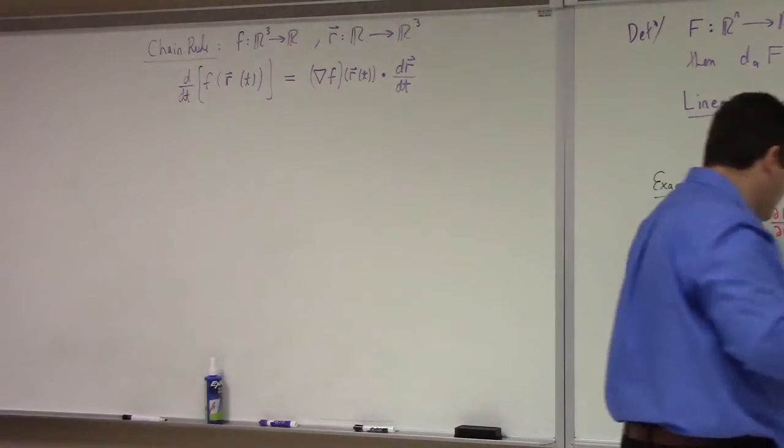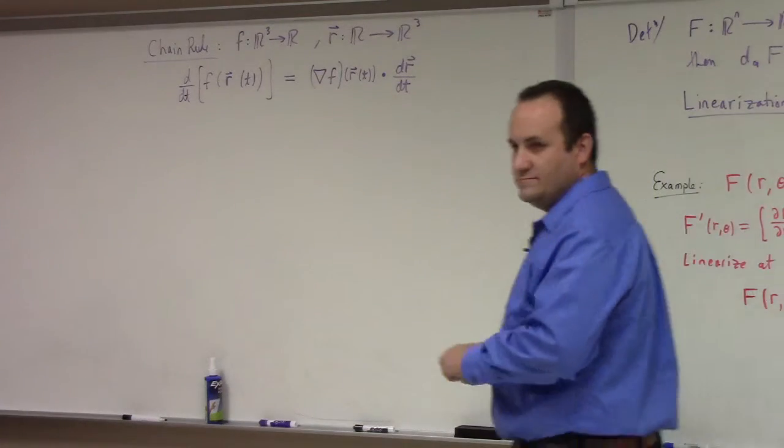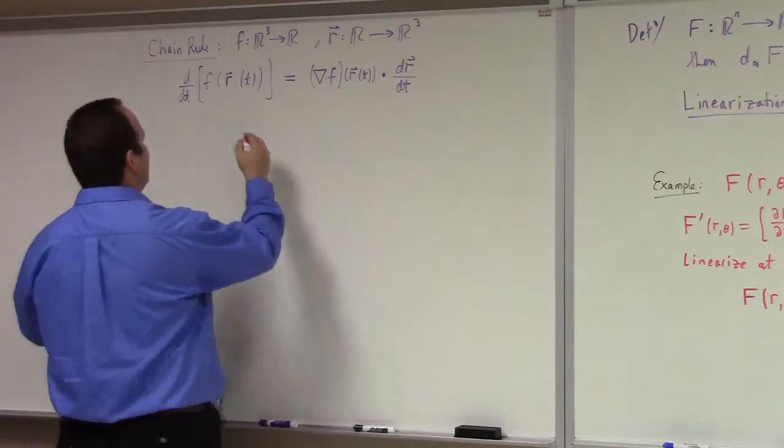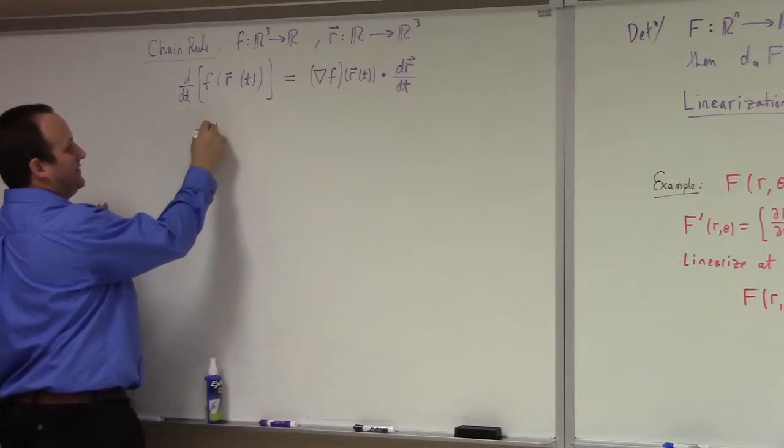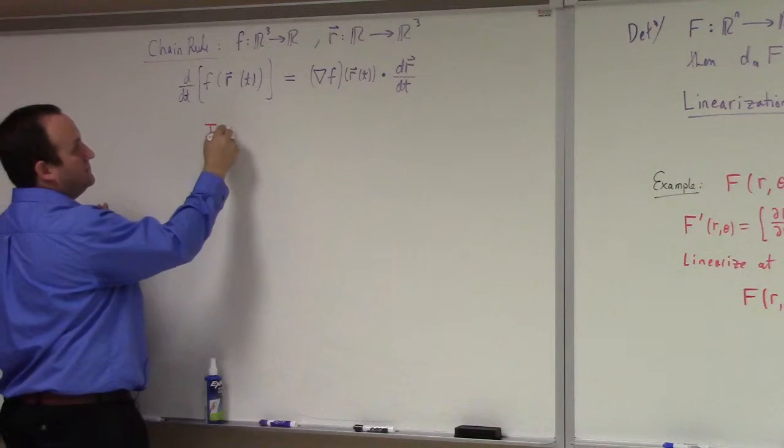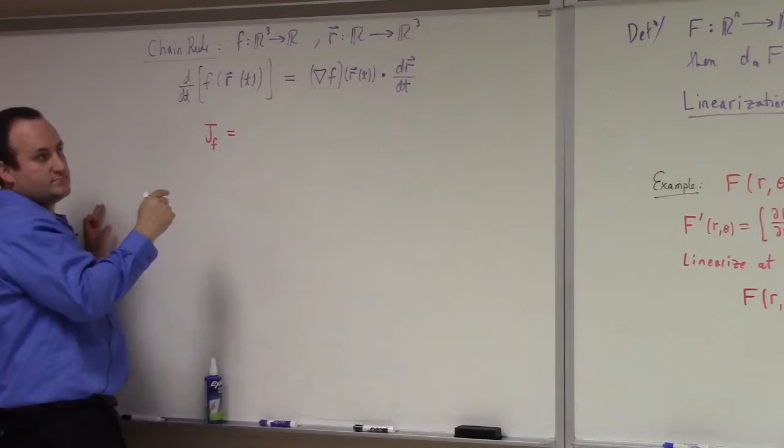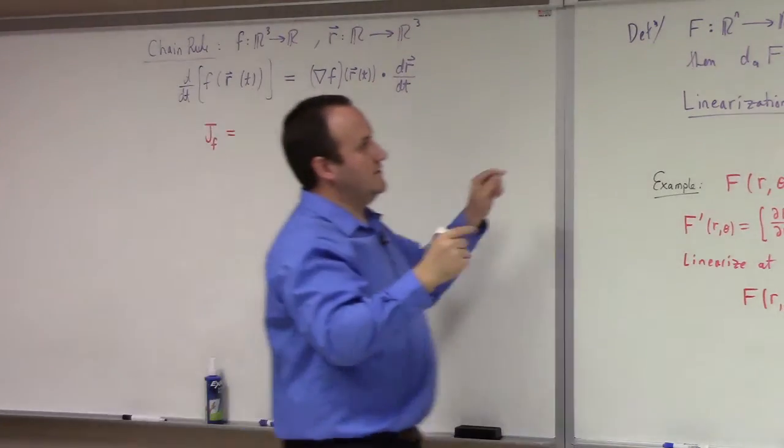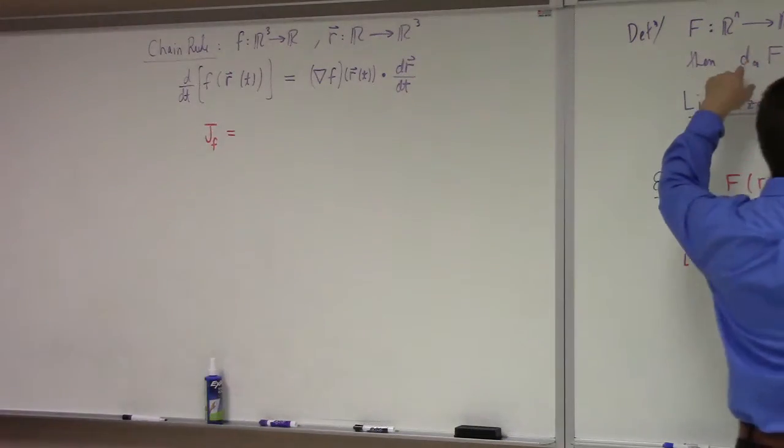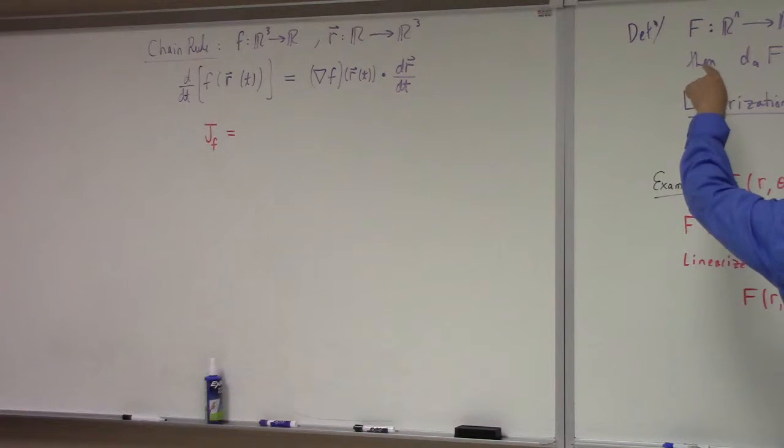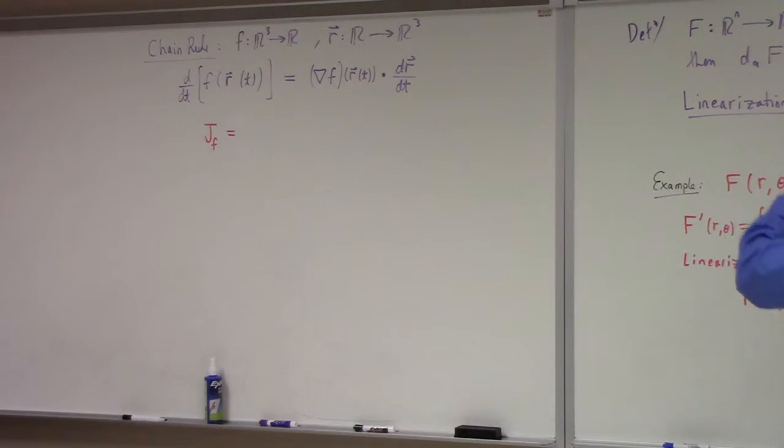That's a Calculus 3 chain rule. So, what's the Jacobian of F? I should emphasize here, if you go from R^n to R^m, the Jacobian of F at A is M by N. It's an M by N matrix.